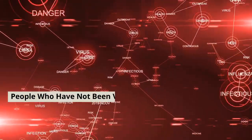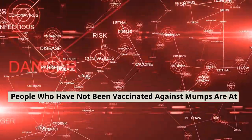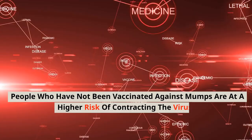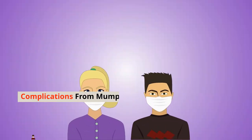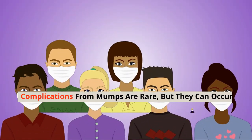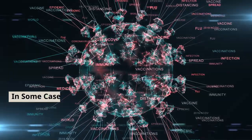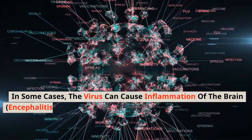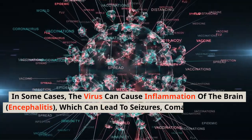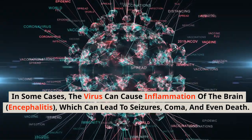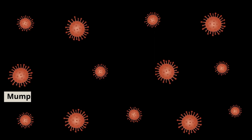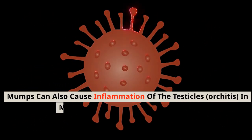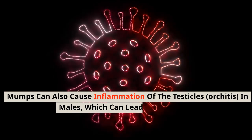People who have not been vaccinated against mumps are at a higher risk of contracting the virus. In some cases, the virus can cause inflammation of the brain, encephalitis, which can lead to seizures, coma, and even death. Mumps can also cause inflammation of the testicles, orchitis, in males, which can lead to infertility.